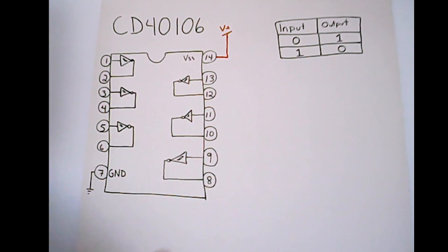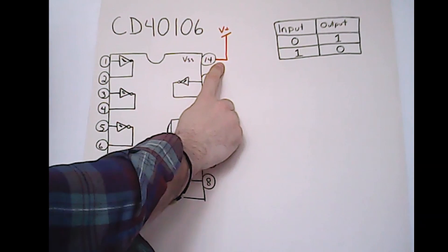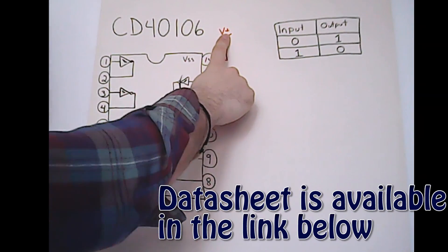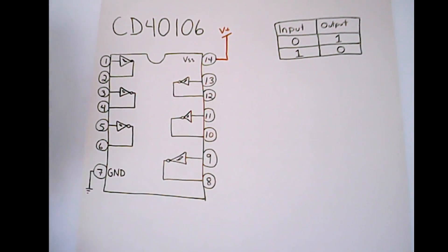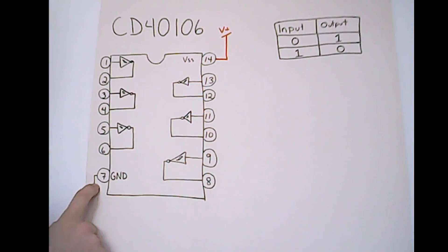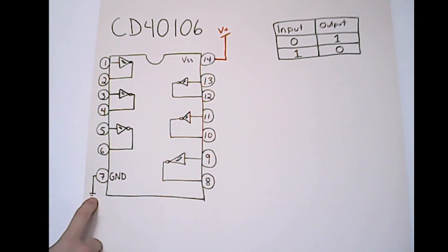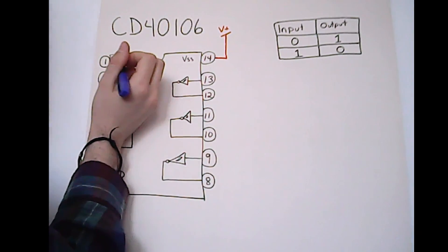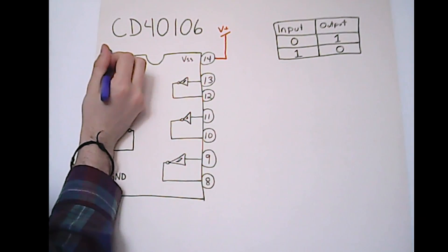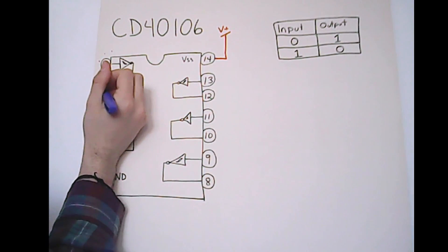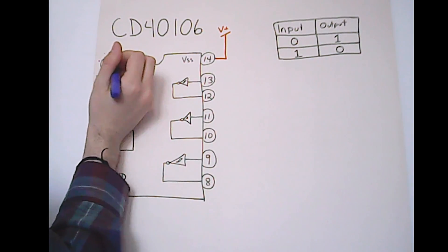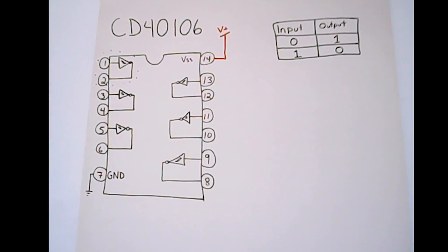Okay, this is the IC pinout. Pin 14 is the positive power supply. Pin 7 is the ground connection. As you can see, there are six inverters in this IC — that's the way it's configured inside. We want to focus on the first inverter for now.